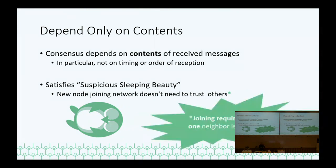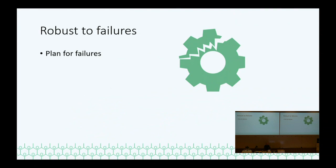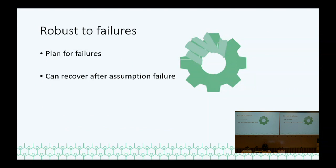Second, we want to depend only on the contents of messages, not on the order or timing of when we received messages. The reason is to solve the sleeping beauty problem: if somebody wakes up after 50 years and goes on the internet to ask what's the current state of the system, we don't want them to have to trust that they've found an honest majority now. They want to get the content — somebody gives them a proof and they verify the state. This only works if you depend only on contents, because you cannot prove the timing of messages if you haven't been there to receive them. This way you need only one honest neighbor, not an honest majority of neighbors.